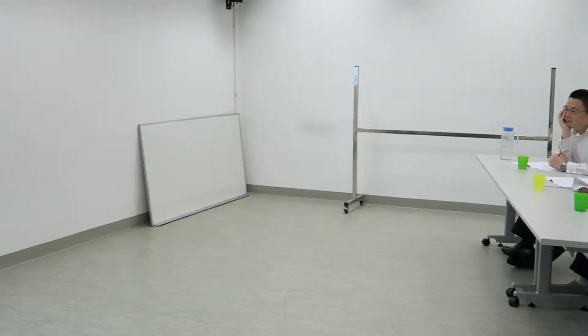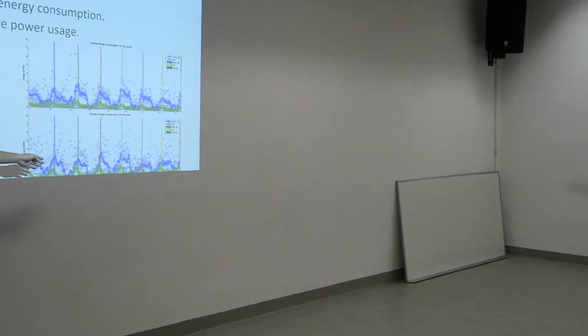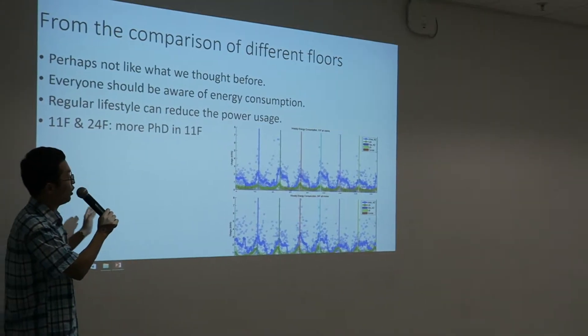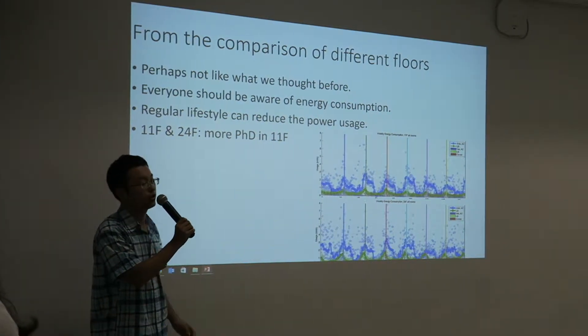By comparing the two floors, we find that the 24th floor — the girls' floor — uses more energy than the 11th floor. This tells us that it is not like what we thought before, that boys tend to use more energy than girls. So everyone should be aware of their energy consumption and take action to reduce usage. Also, the 11th floor has more PhD students who maintain a more regular lifestyle, which shows that a regular lifestyle can actually reduce power usage.